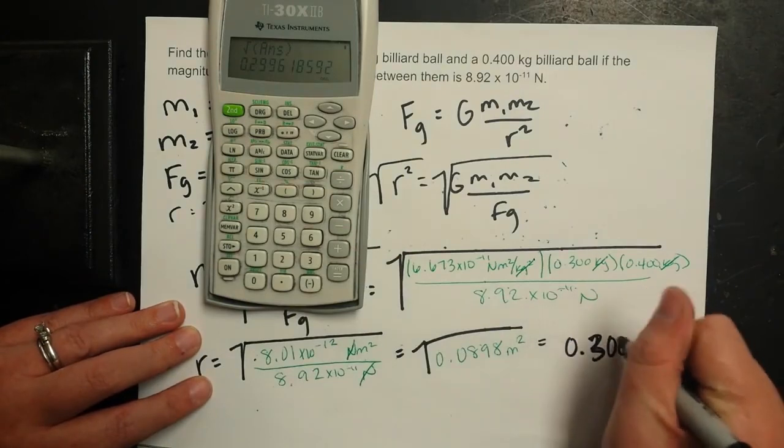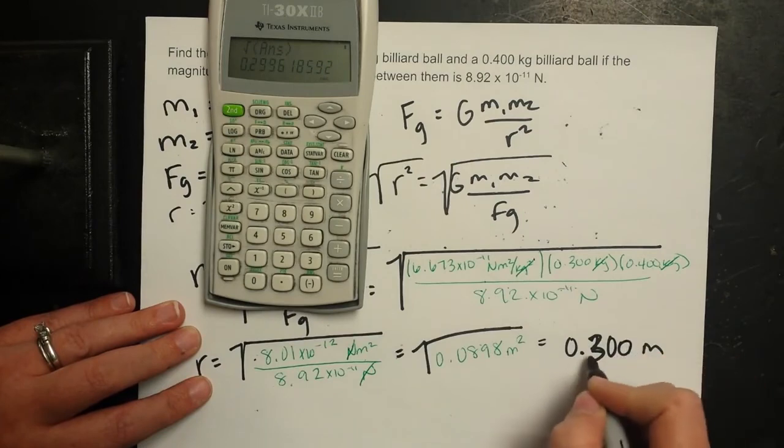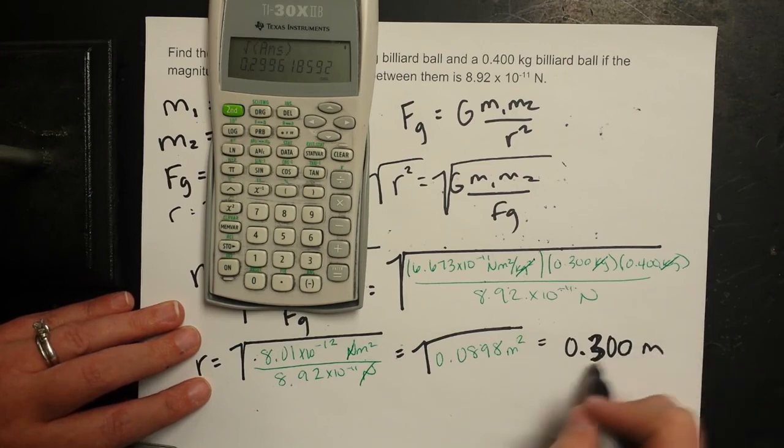So 0.3, because that's going to keep rounding up. So 0.3 meters, or another way we could do this is, we'll just go ahead and keep it there because we like things in meters. So a little under half a meter.